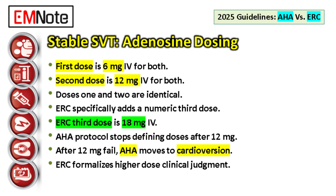Let's flip to fast heart rates — adenosine for stable supraventricular tachycardia. Both guidelines agree on the first two doses, which simplifies things. Both say 6 milligrams intravenously first; if that doesn't work, both recommend 12 milligrams intravenously for the second dose. No difference there.